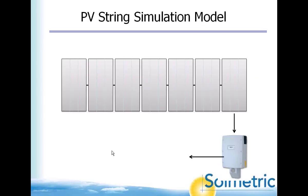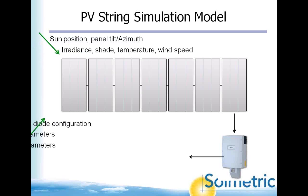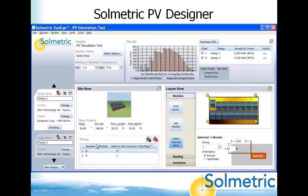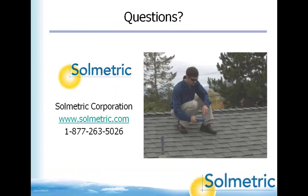For PV applications, we have the Solmetric PV Designer software, which pulls in SunEye shade readings — shown as icons on the roof where they were taken — calculates where shade will impact modules, pulls module specs from a database, and calculates overall AC production for up to four designs for comparison. This software is associated with the SunEye but also sold separately. We have a webinar on the PV Designer tomorrow at 10 o'clock California time — feel free to join.